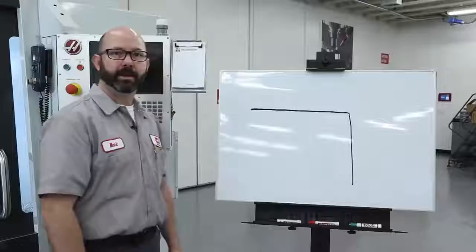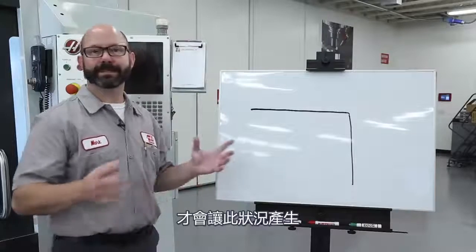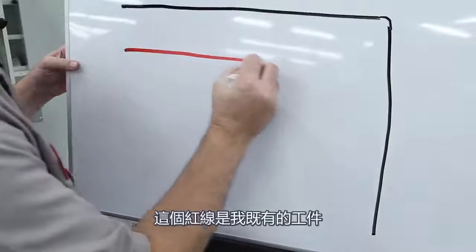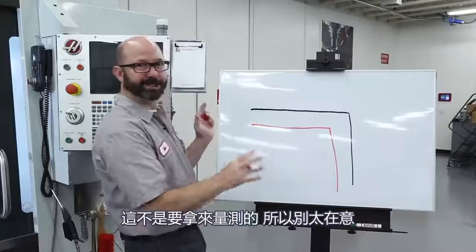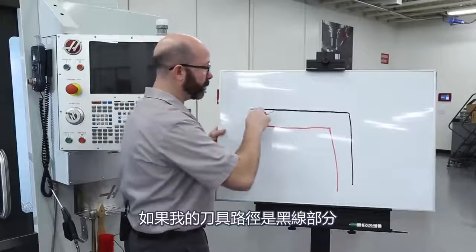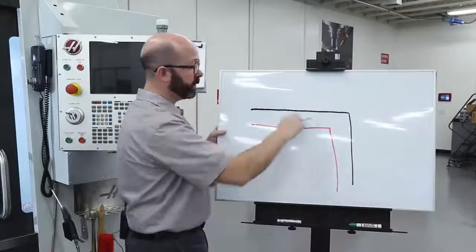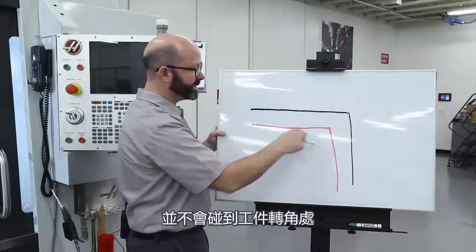As a footnote, rounding outside corners is not going to change your part geometry at all. It's not going to gouge your part because we're using round tools. The corner radius would need to be larger than the tool radius for that to happen. Imagine the red line is the actual part and the black line is the tool path — it wraps around the red line and is not going to touch that corner.